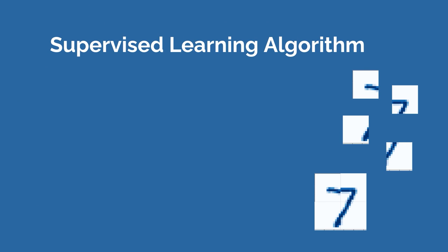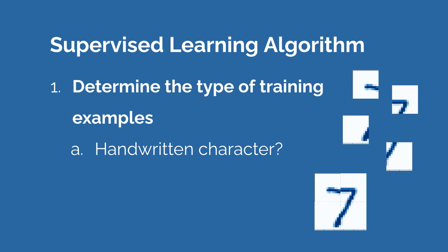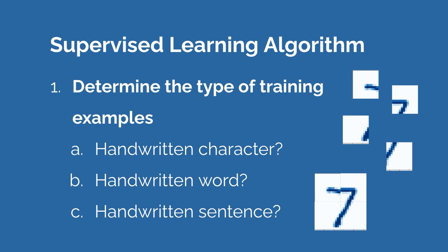Let's go back to talking about the supervised learning algorithm. There are several steps to building out a supervised learning algorithm — we're going to code all these steps later in this course, but first let's look at a bird's-eye view. Step one is to determine the type of training examples you're going to feed your algorithm. For example, if you're training your algorithm to recognize hand-drawn words, you have to decide: will you train it on handwritten characters, handwritten words, or handwritten sentences?